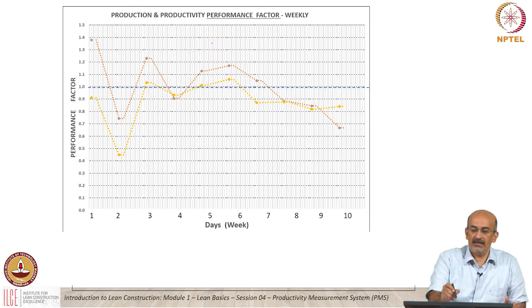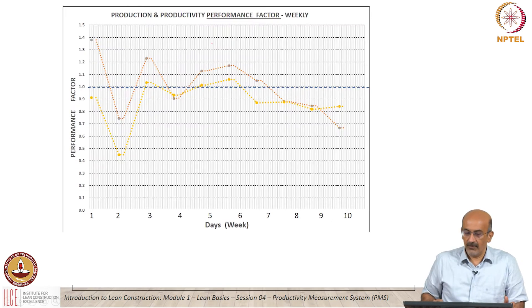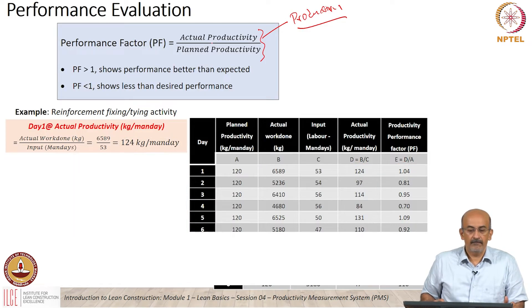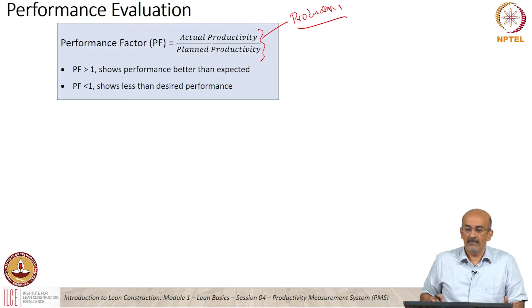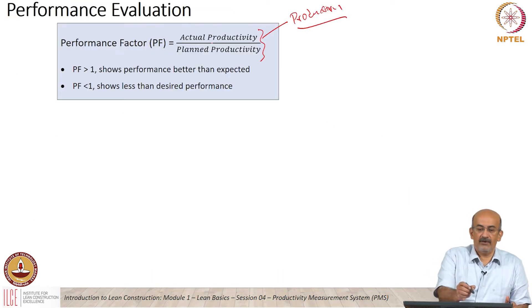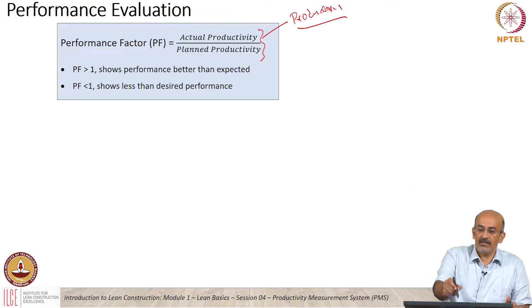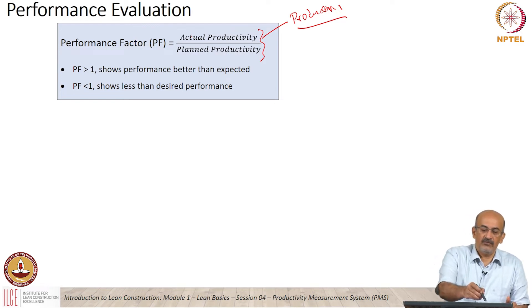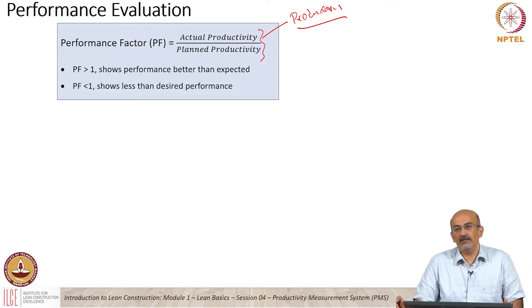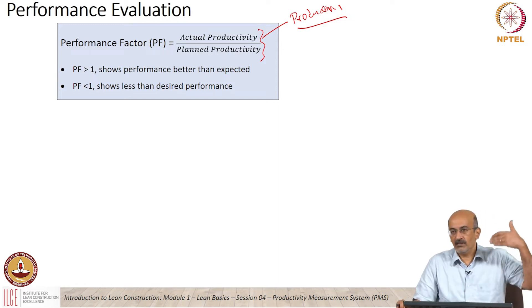The same thing applies for production — the performance factor for production will be actual production divided by plant production. So if the performance factor is greater than 1, it means my actual is better than plan.